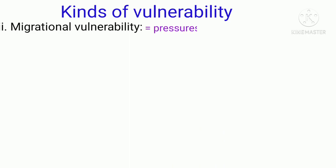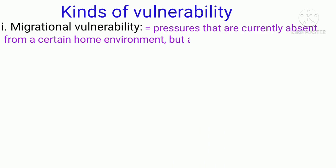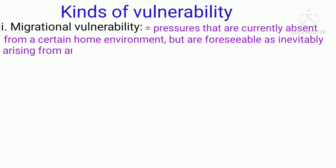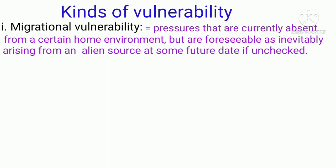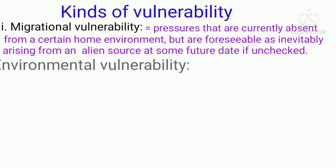Migrational vulnerability is the other type. It refers to pressures that are currently absent from a certain environment but are foreseeable as inevitably arising from an outside source at some future date if unchecked. For example, assume there is a certain disease or insect pest at a certain location, but currently it is not present or not yet shown. If we do not check for it, that disease or insect pest may arise in the future. This type of vulnerability is known as migrational vulnerability.